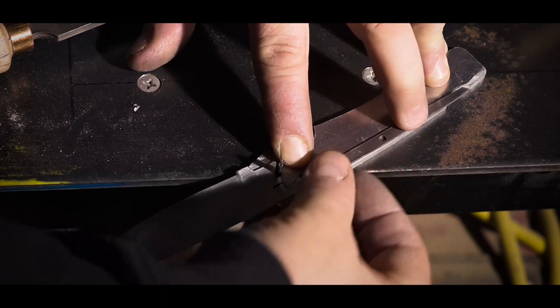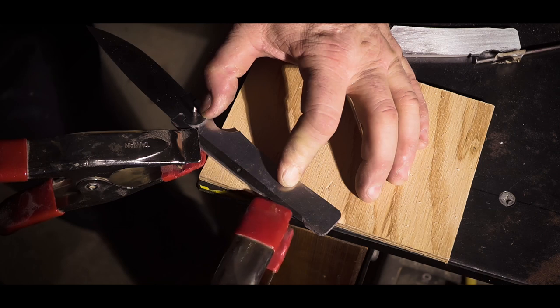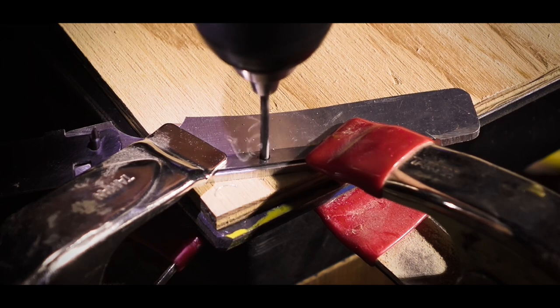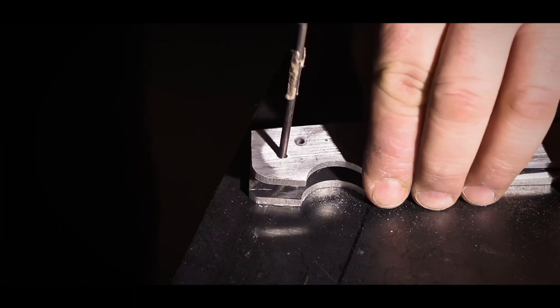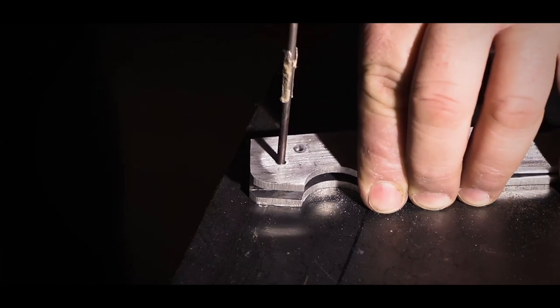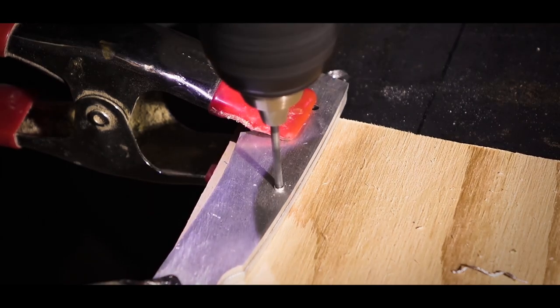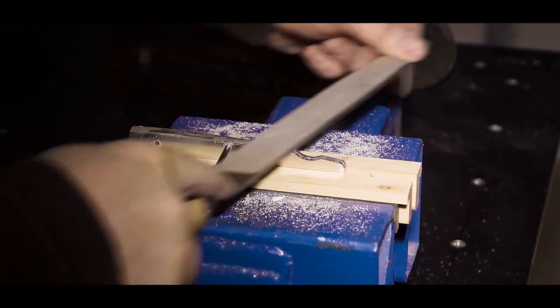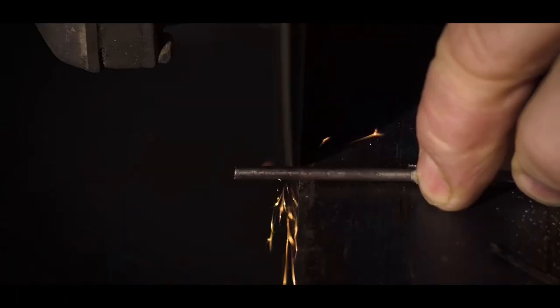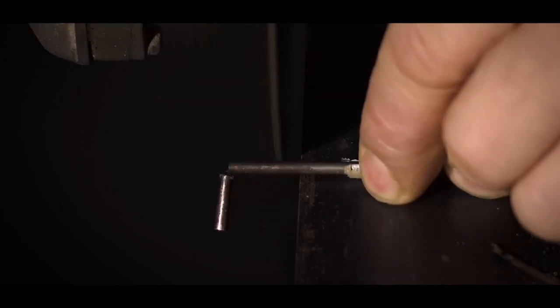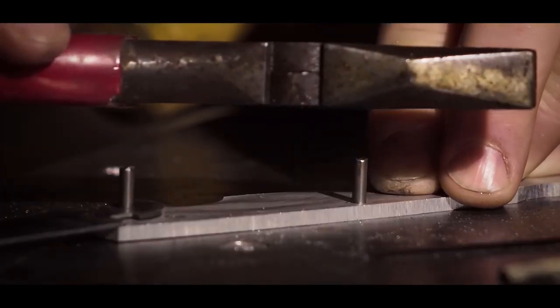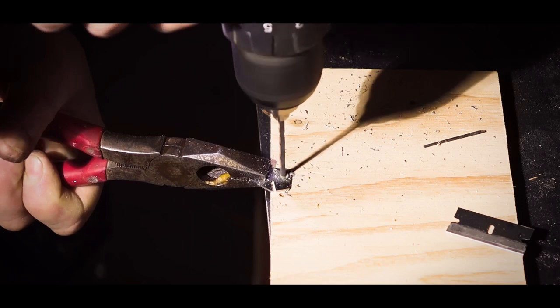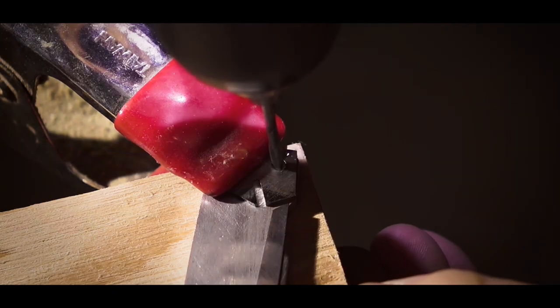Rather than use the template for the spine lock pivot, I'm using the spine lock itself lined up with the blade to mark that hole. I have the two pins that are not shown in the template, but they hold the piece that holds the spring in.